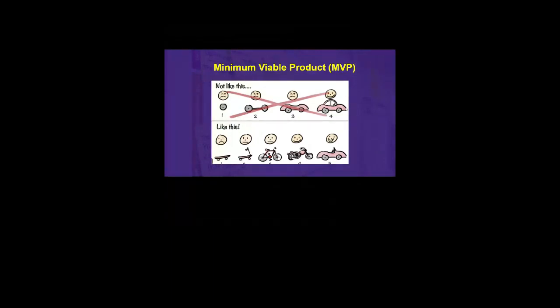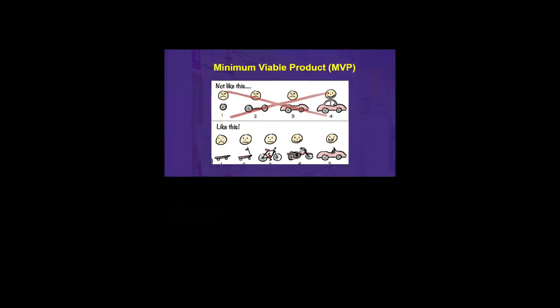An important illustration about MVP: it's not about giving someone a wheel, then two wheels, then finally a car. Instead, you build a skateboard first, release it to the public, see how it is received, then add a handle to make a scooter, then a bicycle, then a motorcycle, and finally a car. That is what a minimum viable product is — not releasing one component at a time. Eric Ries, author of Lean Startup, introduced this term and this famous example.